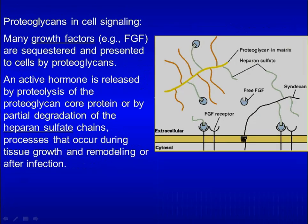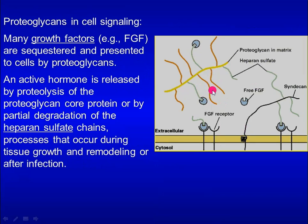Many growth factors such as FGF are sequestered and presented to cells by proteoglycans. An active hormone is released by proteolysis of the proteoglycan core protein or partial degradation of heparan sulfate chains. These processes occur during tissue growth and remodeling or after infection.